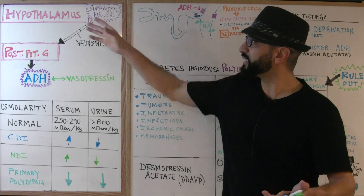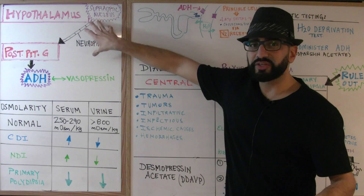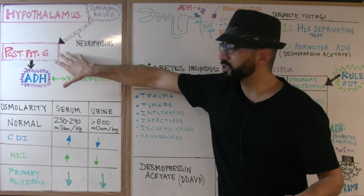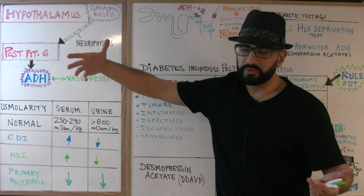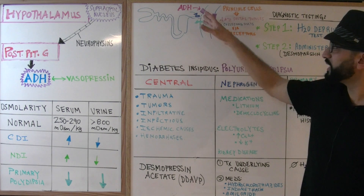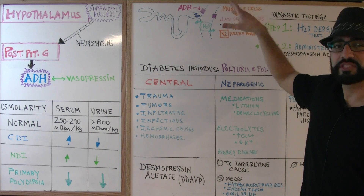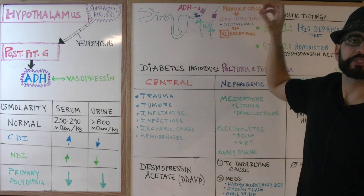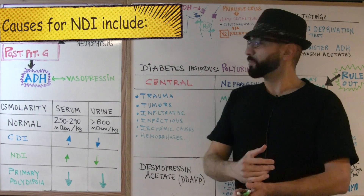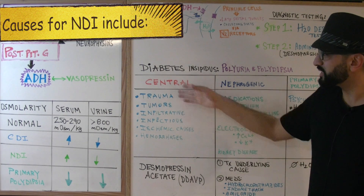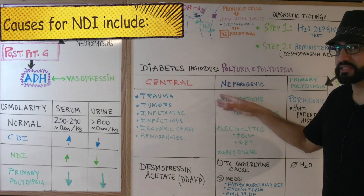Now what if the brain is actually doing its part? The supraoptic nucleus made the ADH, it got brought to the posterior pituitary gland, the posterior pituitary released ADH in normal amounts. It makes its way down to the kidneys, but there's something at the level of the kidneys preventing ADH from working on its specific cells or receptors. We have to think about issues happening at the kidneys — that's why we call it nephrogenic diabetes insipidus.